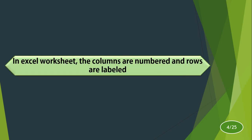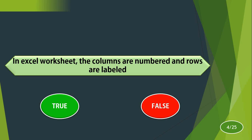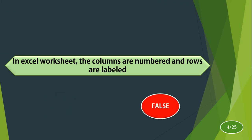In an Excel worksheet, the columns are numbered and rows are labeled. True or false? The right answer is false. Here the columns are labeled and rows are numbered.